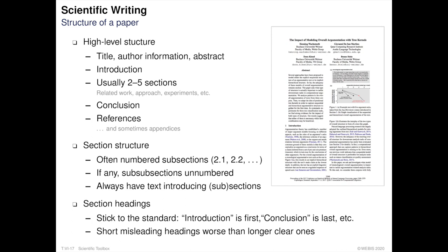The contents of a paper in computer science are often structured in a very similar way. The paper starts with the title, the authors, and the abstract. Then, the introduction outlines the problem the paper is trying to solve, and provides a short summary of the solution.